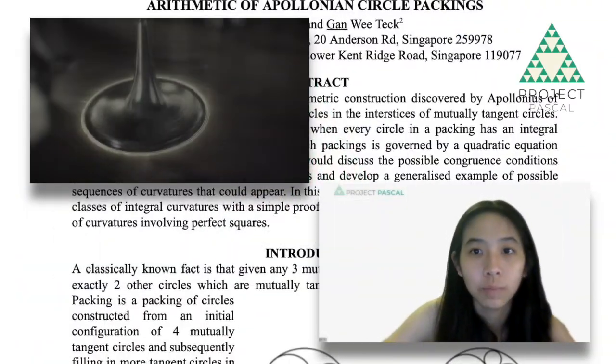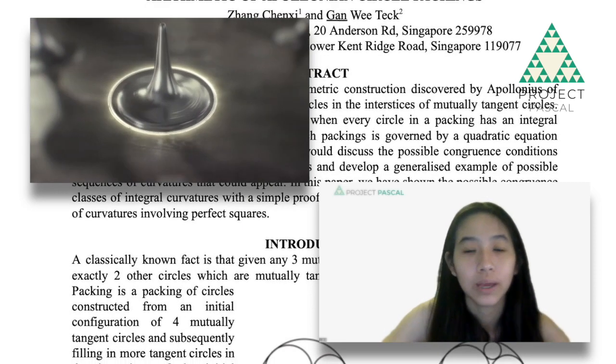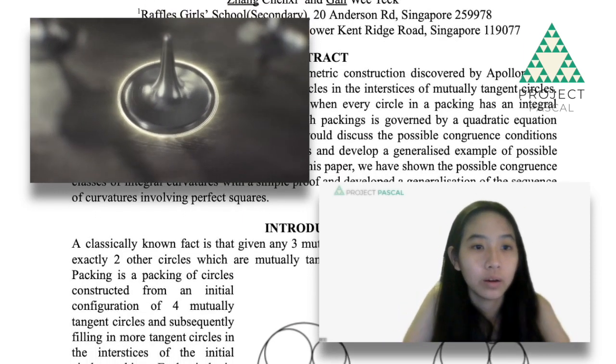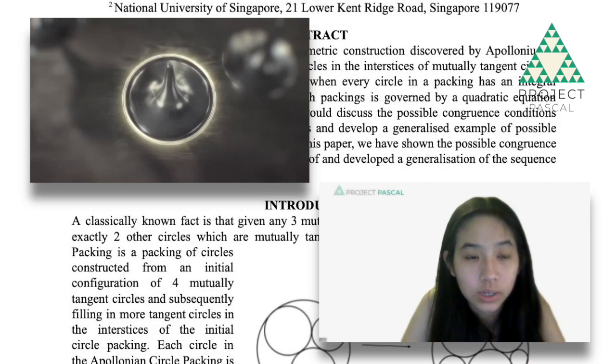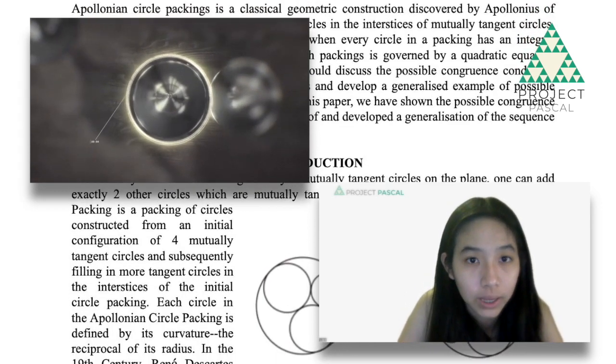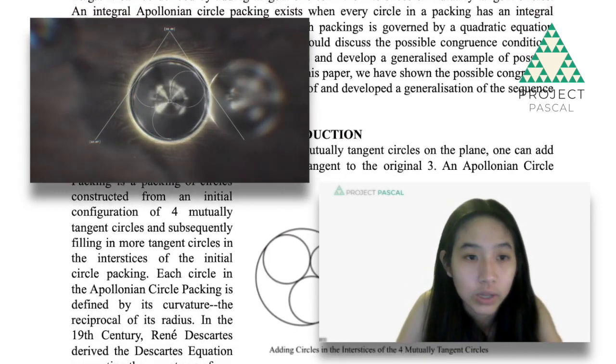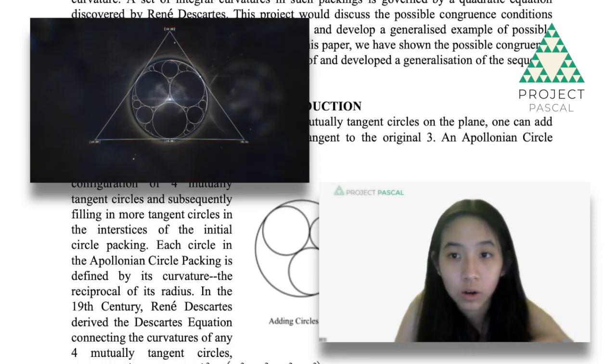My first project, The Arithmetic of Apollonian Circle Packing, is essentially a number theory project that explores the congruent classes of the curvatures of the Apollonian Circle Packing and what relation they have to satisfy based on the congruent classes.